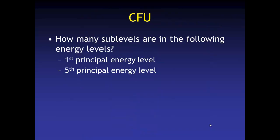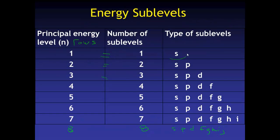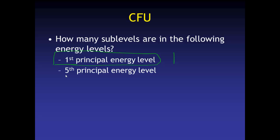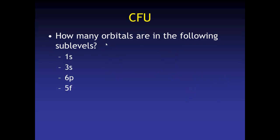So the question is here, how many sublevels are in the following energy levels? We're looking at the first principal energy level. That's the first row on the periodic table. So if we take a look, the first energy level, S, you have one sublevel. So the answer to this one is one. And how many sublevels are in the fifth principal energy level? Take a look at the chart. When you take a look at the chart, you should discover that there are five sublevels: S, P, D, F, and G.